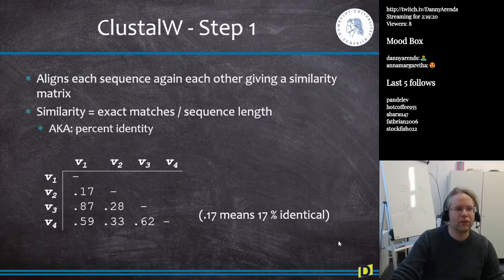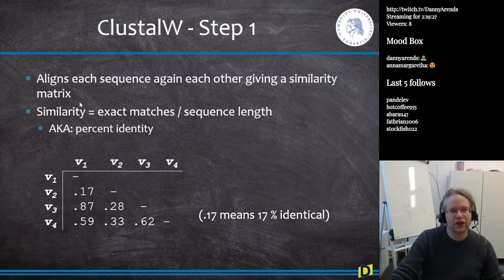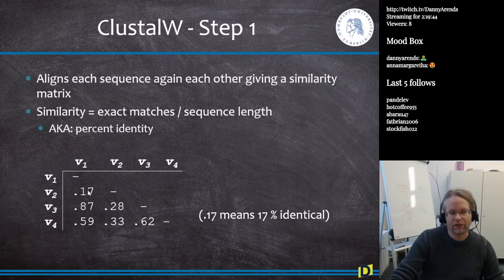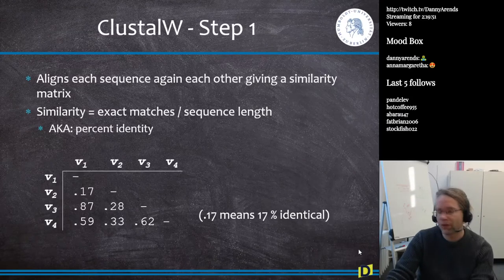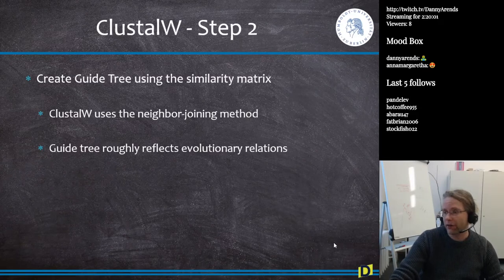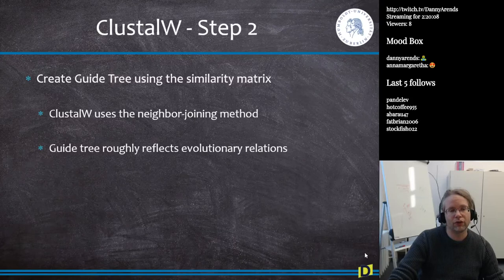Here's a little example of how this works. You align each sequence against each other given the similarity matrix. In ClustalW, the similarity matrix is defined as the number of exact matches divided by the sequence length — this is the percentage identity. So if you have four sequences, 0.17 here means that V1 versus V2 showed 70% identity, meaning 70% of the base pairs matched. Step two is creating the guide tree using the similarity matrix. ClustalW uses neighbor joining instead of hierarchical clustering, and the guide tree is thought to reflect evolutionary relationships.